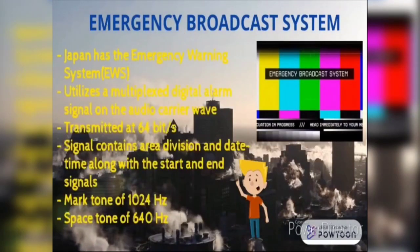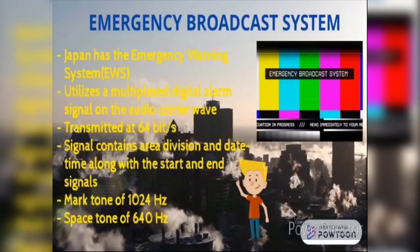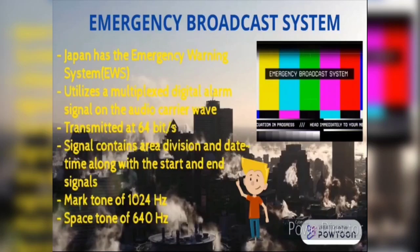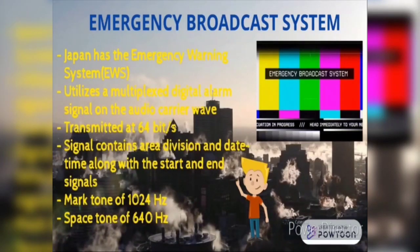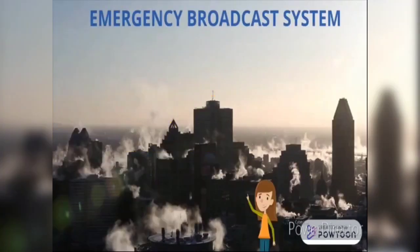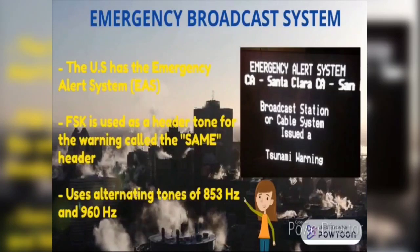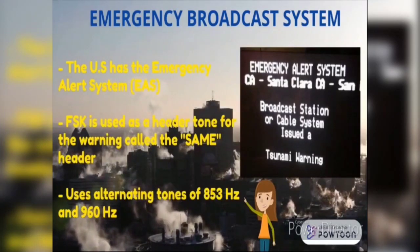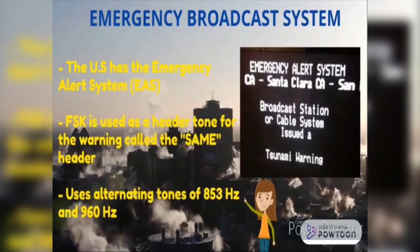The next application is the emergency broadcast system. Japan has an emergency warning system that utilizes a multiplex digital alarm signal on the audio carrier wave, transmitted at 64 bits per second. Its signal contains area division, date and time, along with start and end signals. This frequency has a mark tone of 1,024 Hz and a space tone of 640 Hz. The US has the Emergency Alert System, a national public warning system requiring radio and TV broadcasters, cable systems, satellite, and wireline operators to provide the president with the capability to address the American people within 10 minutes during a national emergency. FSK is used as a header tone for the warning, called the SAME header, using alternating tones of 853 Hz and 960 Hz.